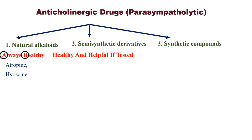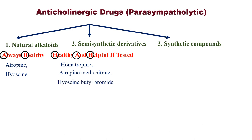For semi-synthetic derivatives, remember the mnemonic 'Healthy and Helpful If Tested': H stands for Homatropine, A for Atropine methonitrate, H for Hyoscine butylbromide, I for Ipratropium bromide, and T for Tiotropium bromide.